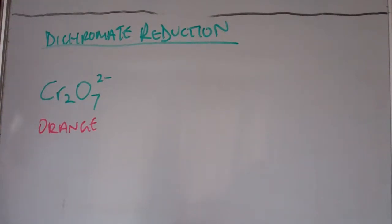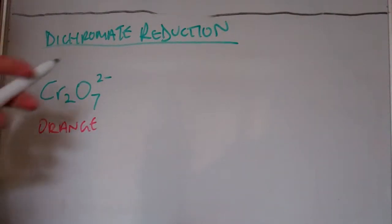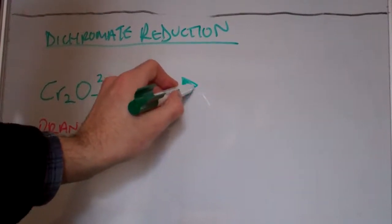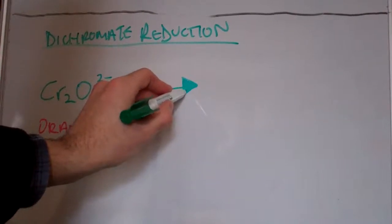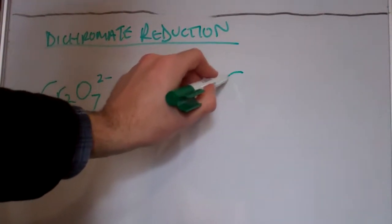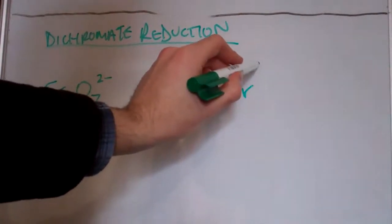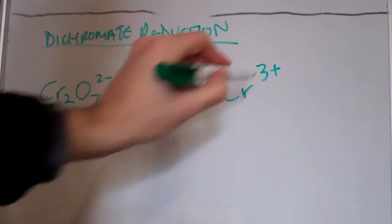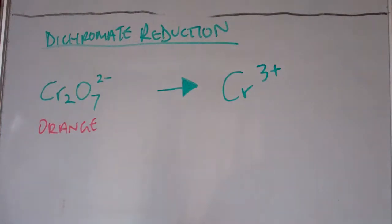Now in a reduction reaction, we're reducing an ion. Well here we've got reduction of an anion to a cation, right? The reduction is chromium 3 ions which is 3+.